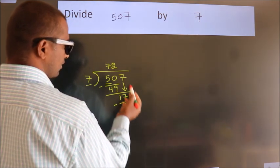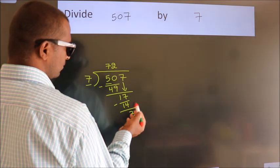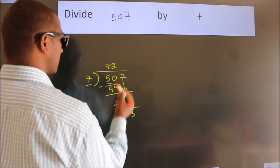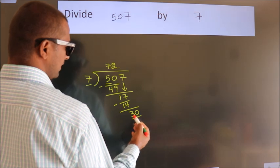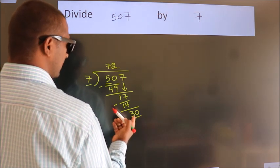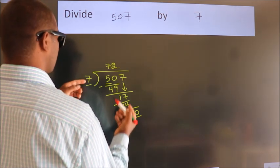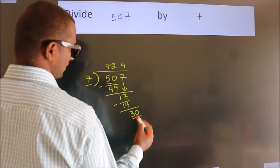After this, no more numbers to bring down. So what we do is, we put a dot and take 0. So, 30. A number close to 30 in the 7 table is 7 times 4 equals 28.